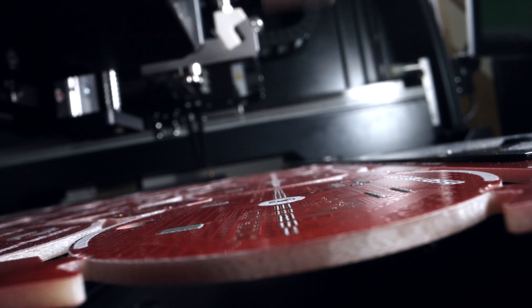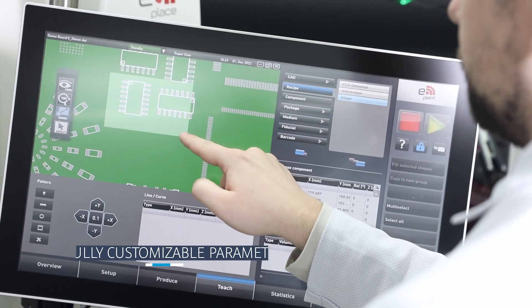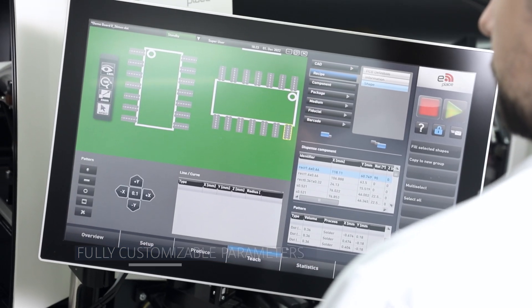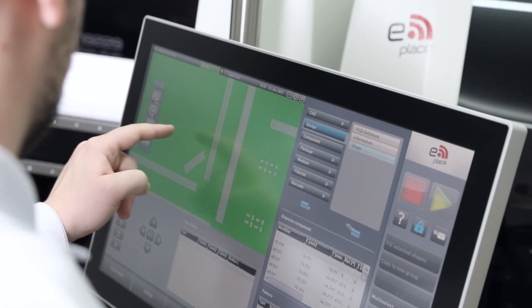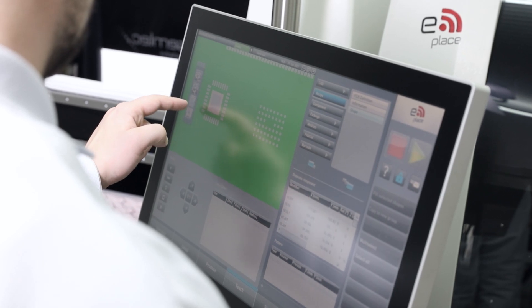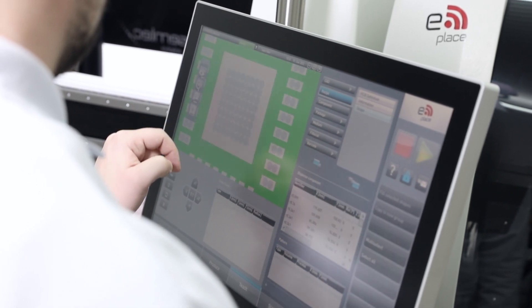For jet printing, one of the main process enhancements is the customer can now customize the volume on pads. If they want to do this with a stencil, they need to order a new stencil. With our solution, they just click some buttons and then they can increase or decrease the volume as they wish. This could happen in a few seconds.